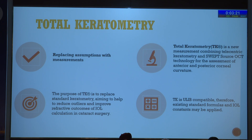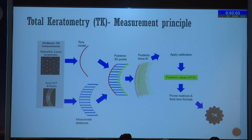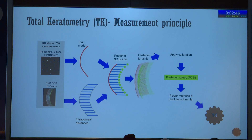Total keratometry was a new measurement combining telecentric keratometry and swept-source OCT technology for assessment of anterior and posterior curvature of the cornea. It was ULIB compatible and therefore could be used with existing standard formulas, and IOL constants could be applied. Using the same basic model of 3-zone telecentric measurement with swept-source OCT, this TORIC model predicts the posterior corneal curvature much better, and thus a total corneal keratometry is measured using the anterior and posterior values.